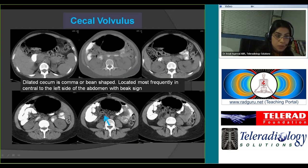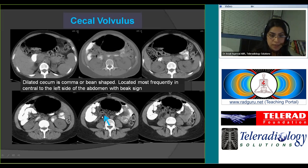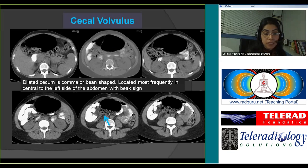Cecal volvulus is also a type of closed-loop obstruction. The dilated cecum is located in an abnormal position — almost to the left side of the abdomen. When diagnosing volvulus or bowel twists, look for the 'beak sign' — beaks result from compressed bowel at the point of the twist — which helps diagnose volvulus and differentiate it from a markedly redundant dilated sigmoid colon or sigmoid colon with ileus.